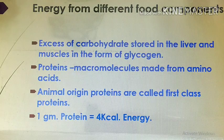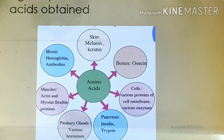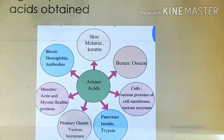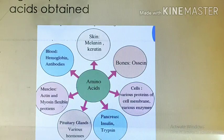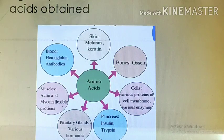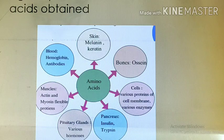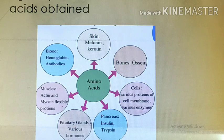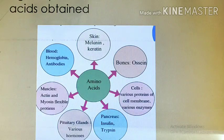We get near about 4 kilocalories of energy from one gram of protein. The protein we take from plants as well as from animals gets digested and converts to amino acids. These amino acids are absorbed in the blood and transported to each and every organ and cell, where they are used to synthesize the different proteins required.